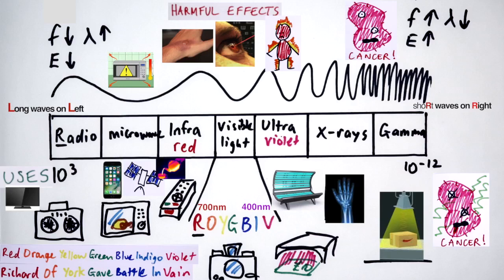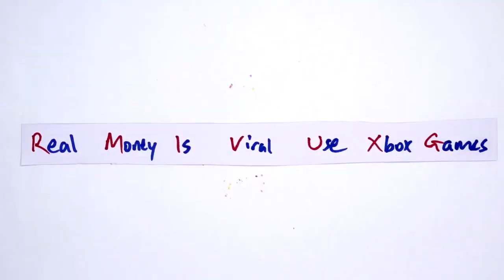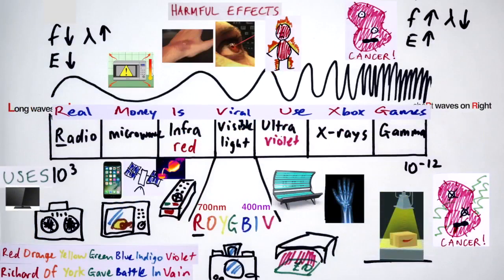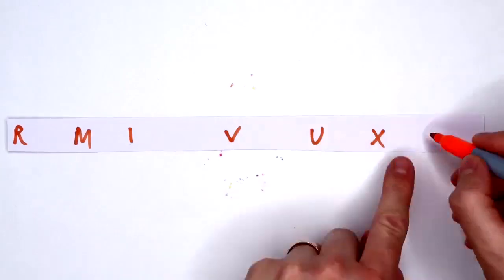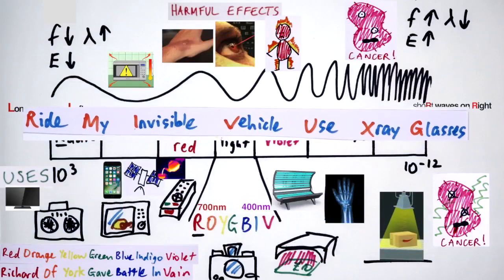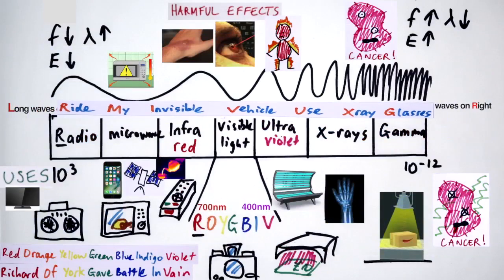The order of the electromagnetic spectrum can be remembered with this mnemonic. Real money is viral. Use Xbox games. Or another one. Ride my invisible vehicle. Use X-ray glasses. See if you can come up with a mnemonic of your own.